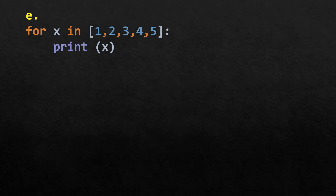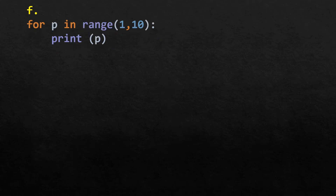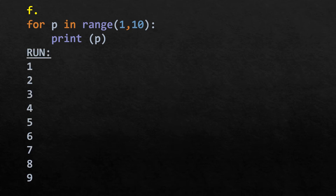For the for loop over the list [1, 2, 3, 4, 5], it prints all values: 1, 2, 3, 4, and 5. Then for p in range(1, 10), it prints 1 through 9 — 10 is not included because range stops before the end value.